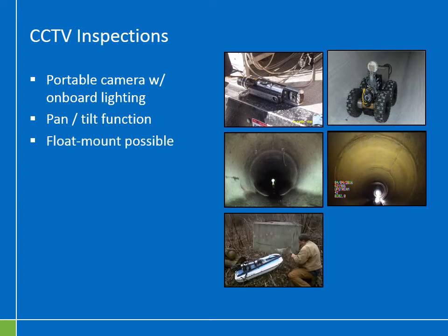If you have a culvert with standing water — perhaps knee length or waist length — you can attach the CCTV camera to a float, as seen here, and then tether the float to a line and feed it down the culvert. You can then inspect the condition of the culvert even though it's partially flooded.